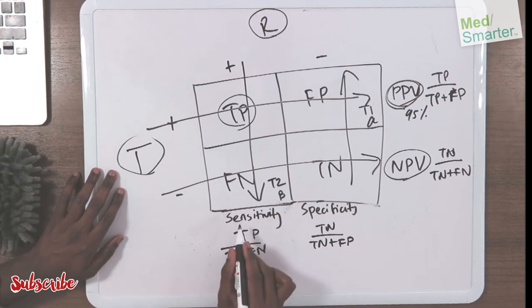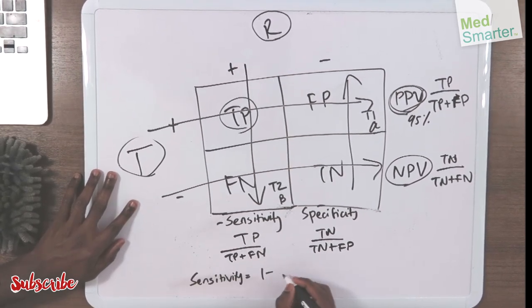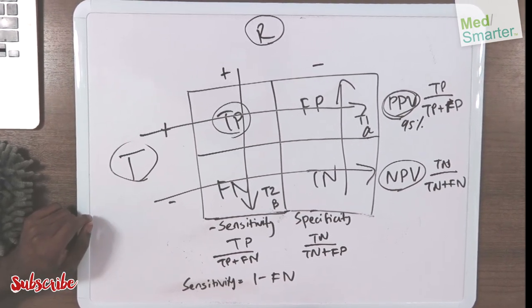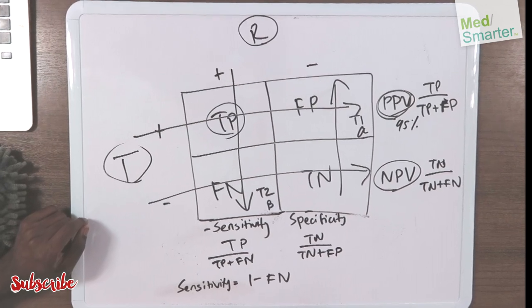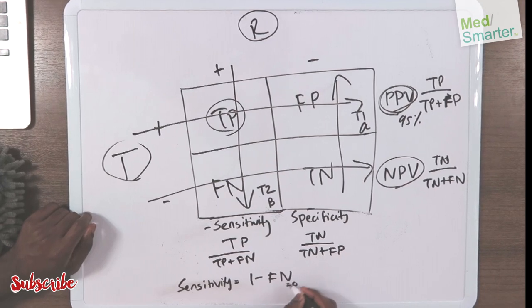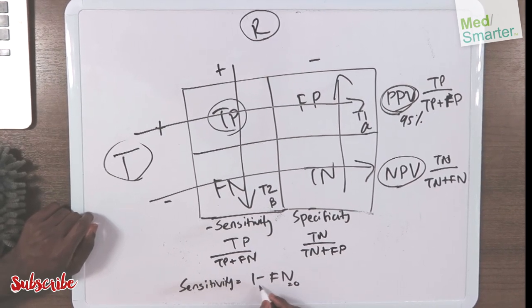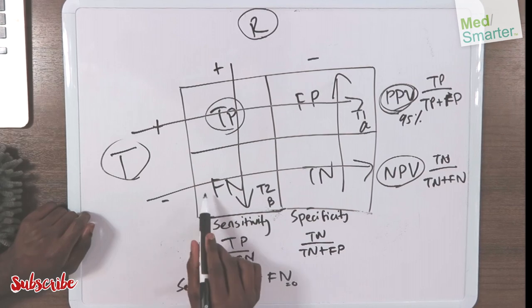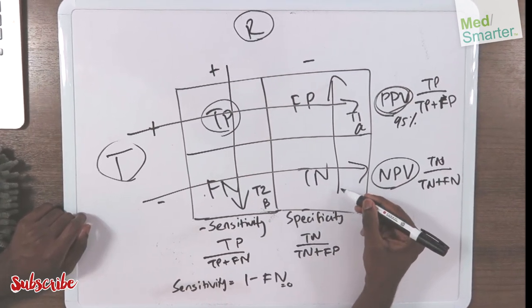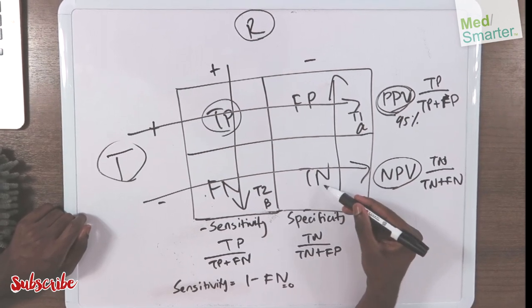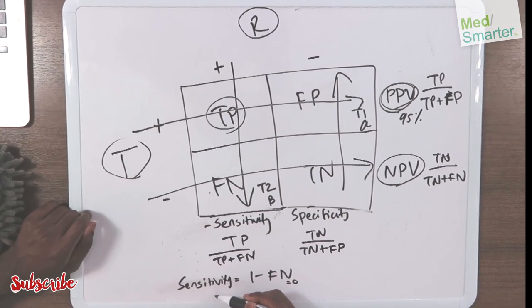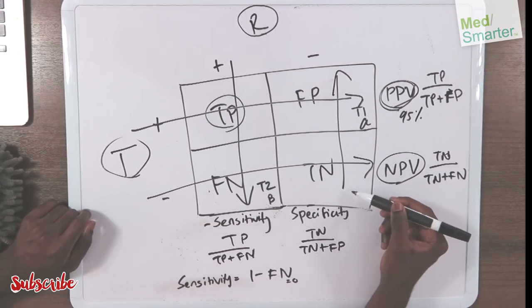Something we have to point out is sensitivity equals one minus the false negative. What's important is as your sensitivity approaches 100%, your false negative must be zero. If your false negative is zero, that means your true negative is 100%.